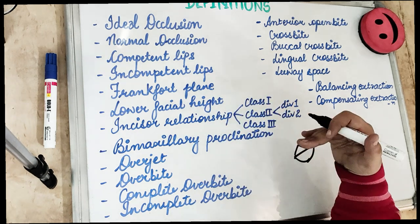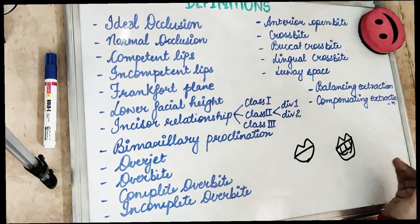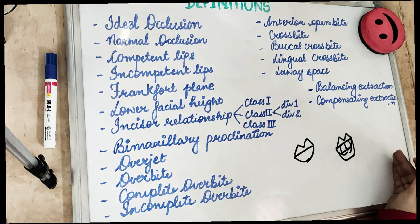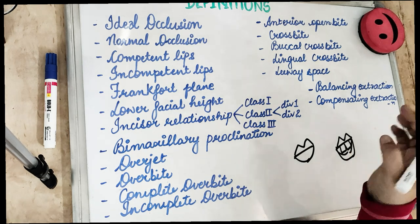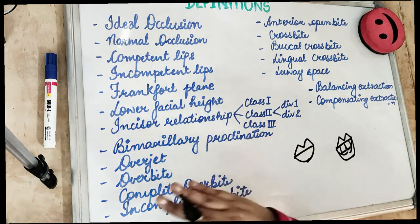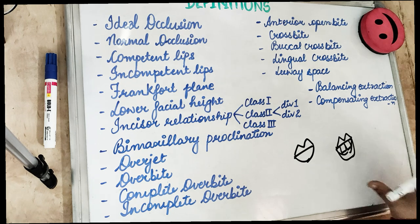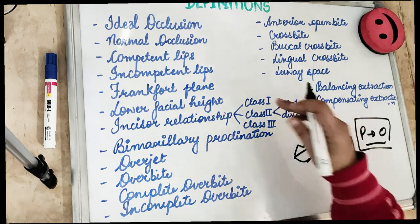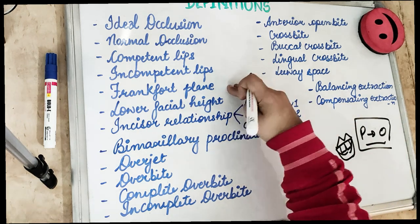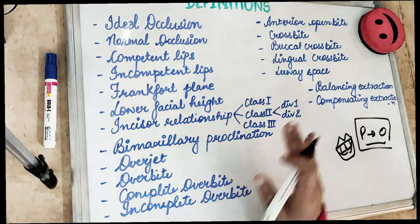The Frankfort plane is a line joining from the superior aspect of the external auditory meatus, located on the ear, to the lower portion of the bony orbit. We palpate the orbit and draw a plane on the face. On cephalometrics, it is the line joining from porion to orbitale. The Frankfort plane is referenced extensively in orthodontics.